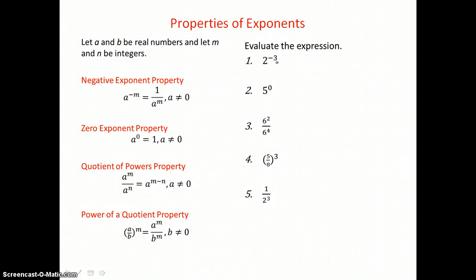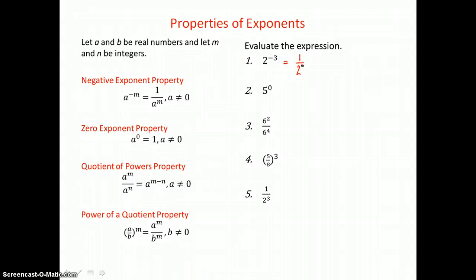In the first example, we want to get rid of that negative exponent. We have a negative exponent property that tells us we can move that base to the denominator of a fraction and make that exponent positive. So we end up with 1 over 2 cubed as a result.